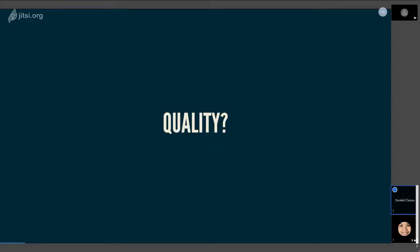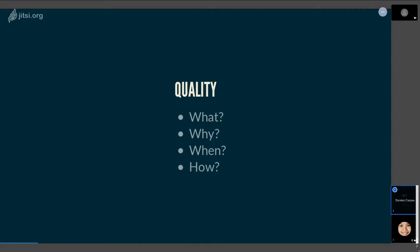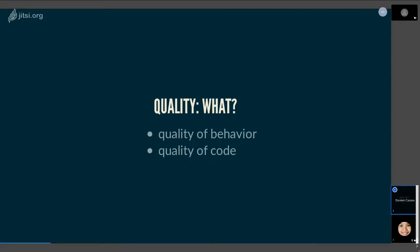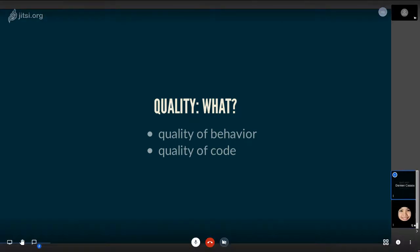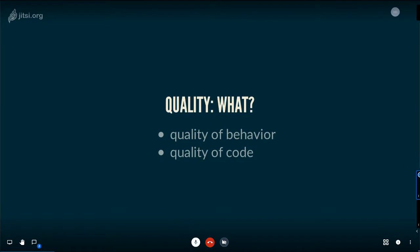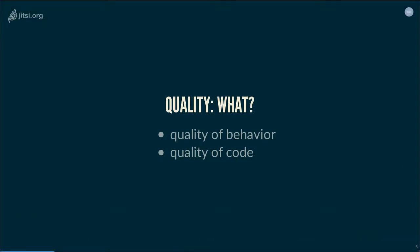So, quality — what, why, when, and how? What am I talking about? I'm talking about quality of behavior: the application is supposed to do what you want it to do, and for that we can implement test suites. I'm also talking about quality of code, which means linting and things like that. I'll deal with this later.